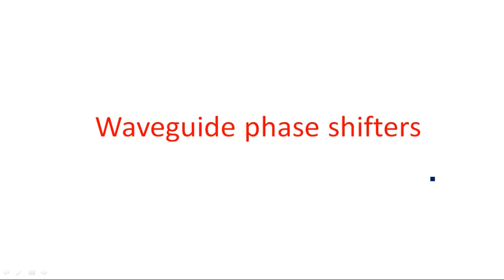In this video I am going to explain about waveguide phase shifters. What do you mean by phase shifter? Suppose it is a device where the input signal has no phase shift, then after passing through this phase shifter it will be experiencing a phase shift of 90 degrees, or 180 degrees, or 270 degrees, or 360 degrees, depending upon the type of material being used. With this concept, inside the waveguide, when a wave travels — whether it may be circularly polarized, vertical, or horizontal polarization — it will be experiencing a phase shift.